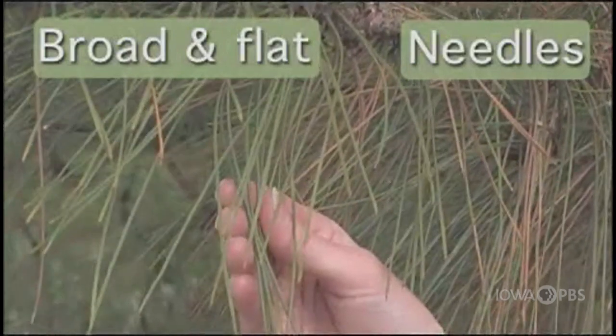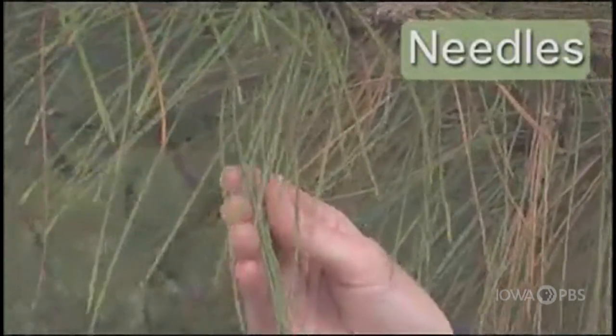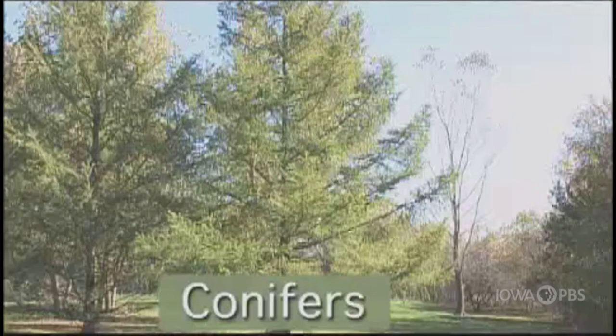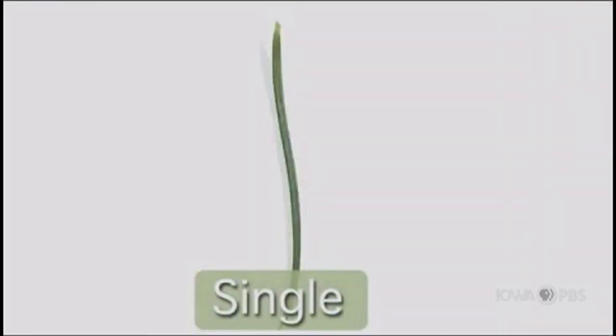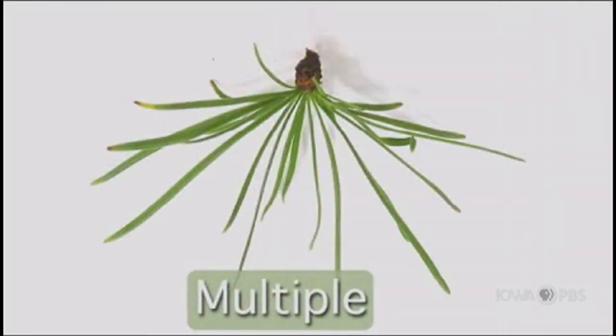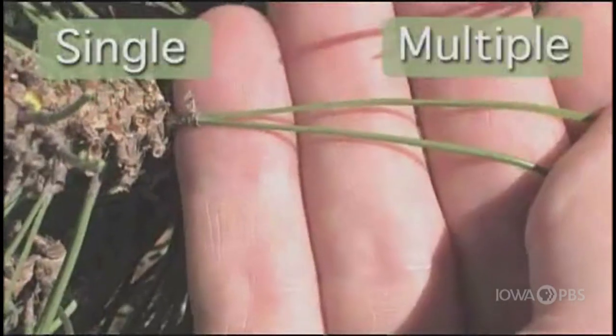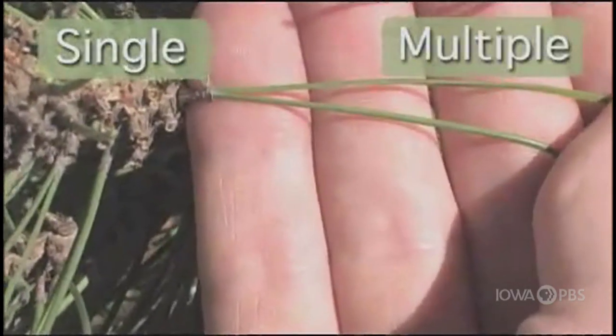Let's identify this tree. The first question in the dichotomous key is: does this tree have leaves that are broad and flat, or are the leaves shaped like needles? The leaves are shaped like needles. Trees that have needles are called conifers or evergreens. Conifers produce cones and stay green year-round.